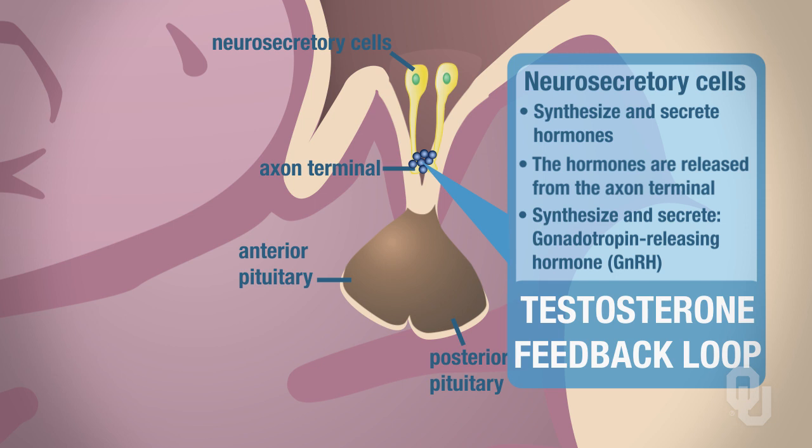Anytime you hear about a releasing hormone, they will always be synthesized and secreted in the hypothalamus — that's a general rule of thumb. So we have the neurosecretory neurons in the hypothalamus that synthesize and secrete gonadotropin-releasing hormone.